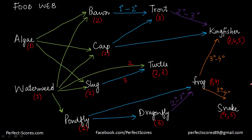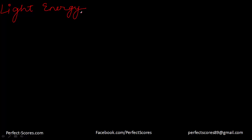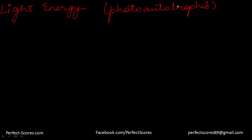The initial energy transferred through the food chain is light energy. All green plants and some bacteria are photo-autotrophic, meaning they use light energy and convert it into chemical energy via photosynthesis. This makes light the initial source of energy for almost all communities. Some bacteria are also known as chemo-autotrophic because they derive their initial energy from chemical processes, but most plants are photo-autotrophic.